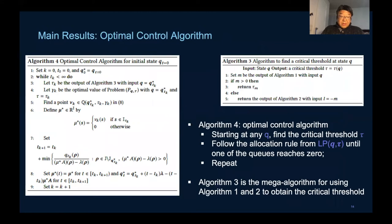More precisely in algorithm 4, which makes use of algorithms 1, 2, 3 to get the critical threshold.